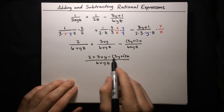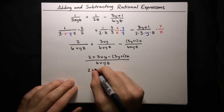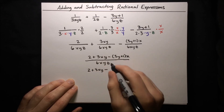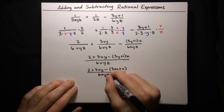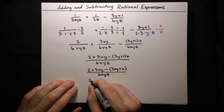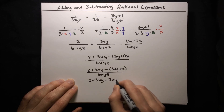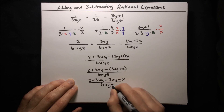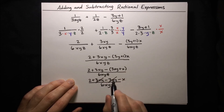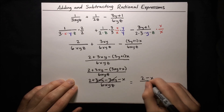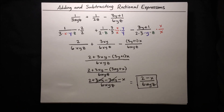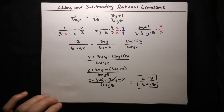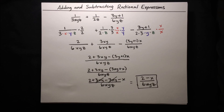Let's simplify by expanding the numerator. We've got 2 plus 3xy, then minus 3xy minus x, all over 6xyz. Distributing the negative sign: 2 plus 3xy minus 3xy minus x over 6xyz. The 3xy terms cancel, and we're left with (2 minus x) over 6xyz. That's our final result. So now we know how to add and subtract rational expressions with different denominators. In the future, we'll also learn how to deal with rational expressions which have fractions within them — where the numerator itself or the denominator itself could be a fraction.